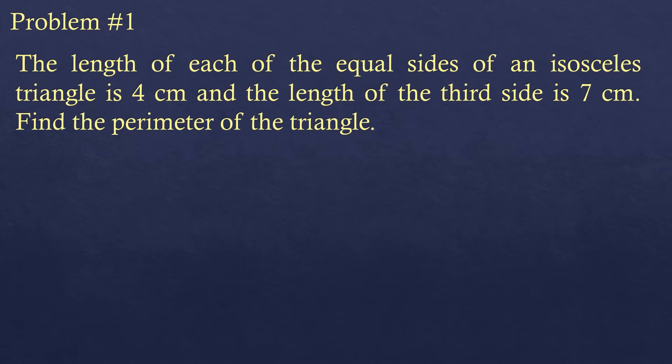We have Problem Number One: the length of each of the equal sides of an isosceles triangle is four centimeters and the length of the third side is seven centimeters. Find the perimeter of the triangle.